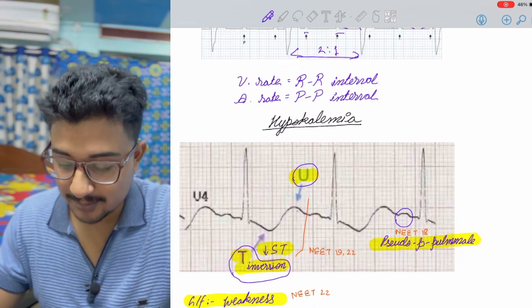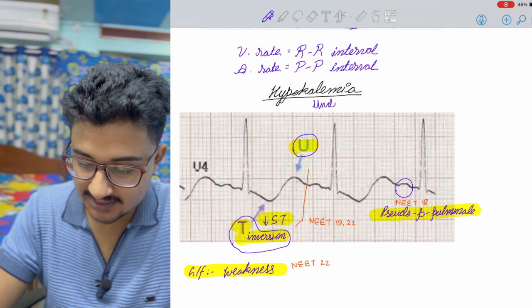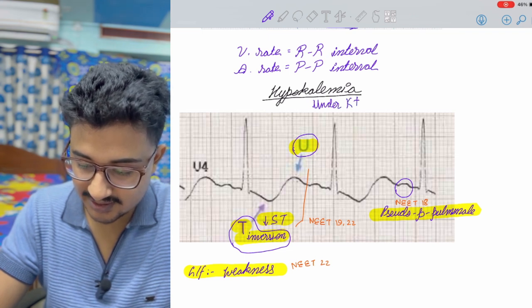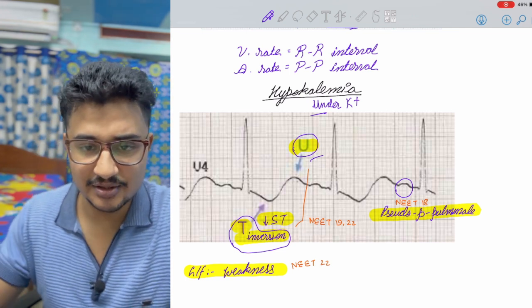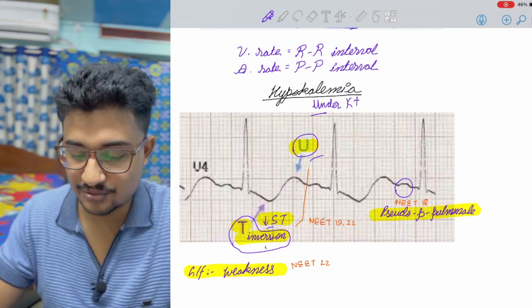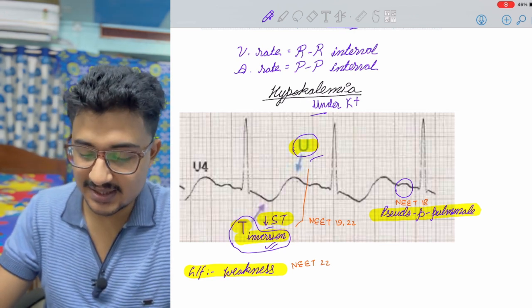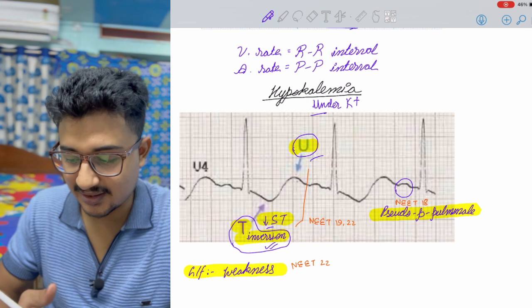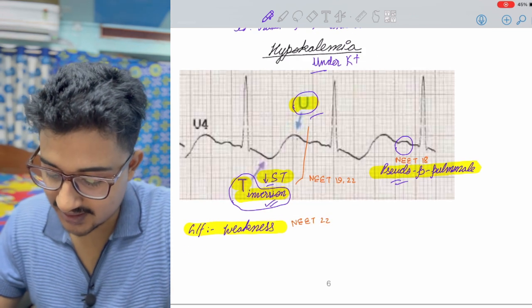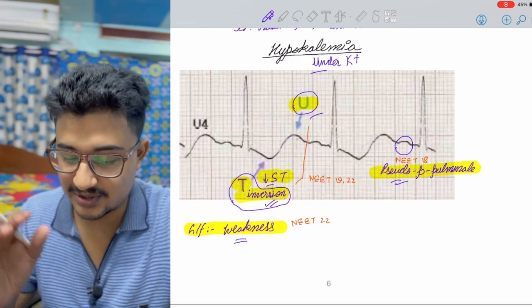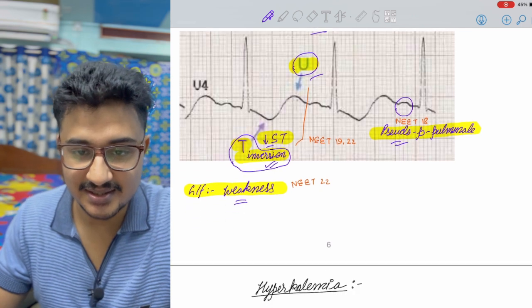Coming to the electrolyte abnormalities and these are important questions. Hypokalemia, hypo means under, kalemia means potassium. U for U wave would be seen. As this is reduced, ST would also be reduced and T would also be reduced. There would be inversion. But as the T waves and ST is reduced, something has to increase. The P wave would increase and it could cause pseudo p-pulmonale that was asked in NEET-PG-2028. The clinical feature was given that this patient comes with weakness and this ECG was given. This was also asked in NEET-PG-2022.